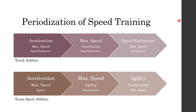To finish off, here are some examples of how we might program speed training. The larger the text, the more the emphasis is on that training quality. For a track athlete, we might start by focusing more on acceleration and force-based qualities, then shift to maximum speed to get them as fast as possible, and then — depending on the specific event — transfer that with some specific speed endurance training, while keeping everything in the program but with less emphasis. For a team sport athlete, we're still going to emphasize acceleration followed by maximum speed, and then transfer all that by doing some specific agility training relevant to their event.